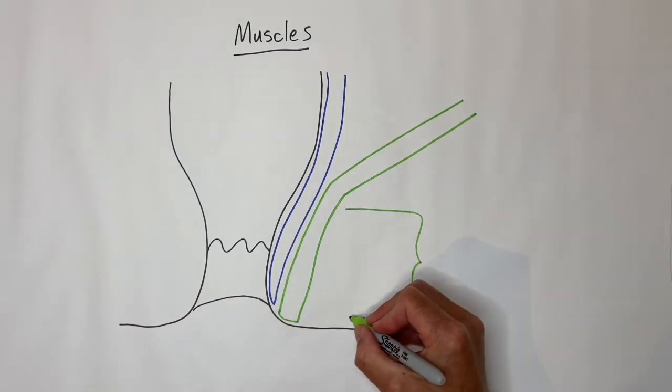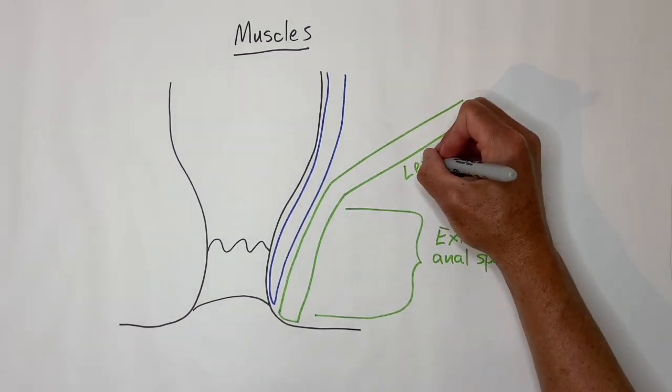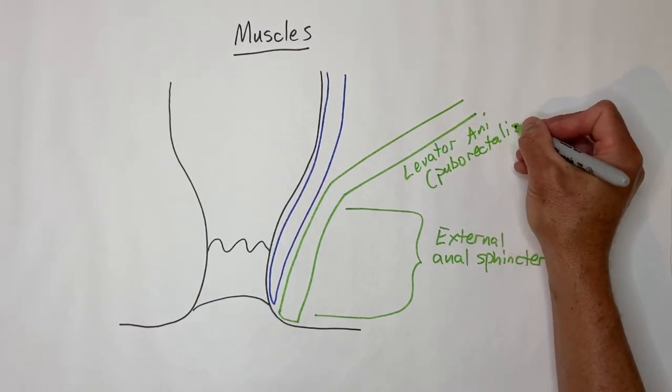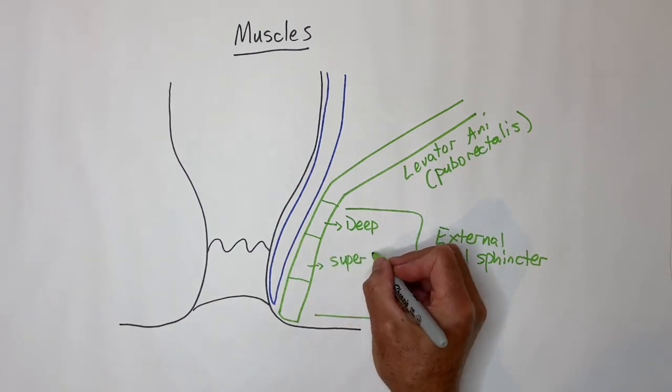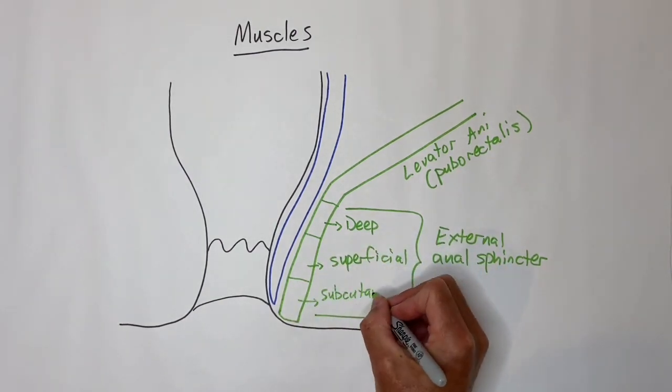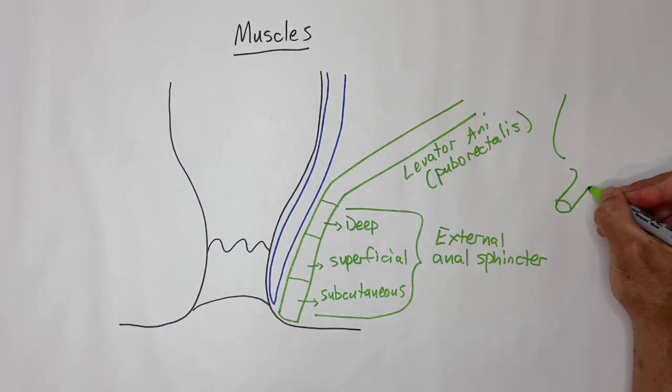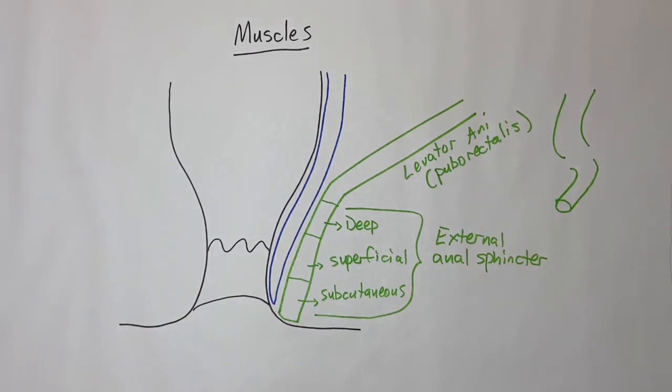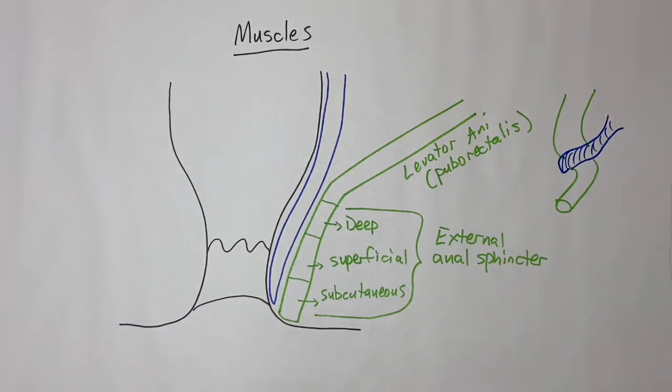The external anal sphincter is an extension of the levator ani muscles, specifically the puborectalis muscle, and has three portions called the deep, superficial, and subcutaneous. At rest, the puborectalis muscle makes a sling around the distal rectum, forming an acute angle, and with defecation the muscle relaxes, allowing the anorectal junction to straighten out.